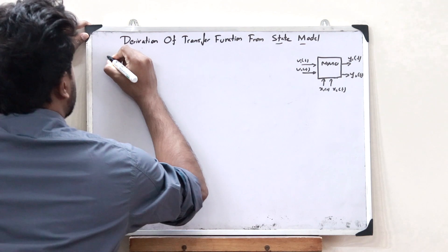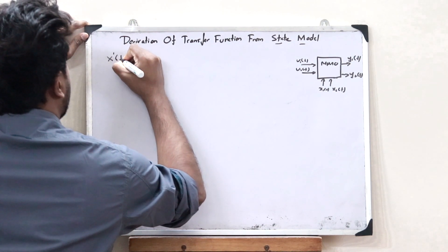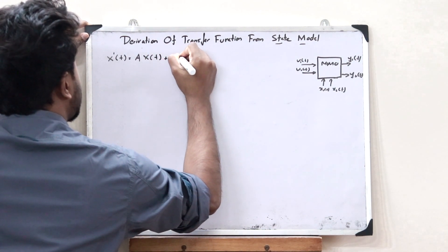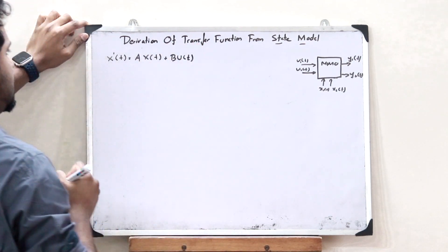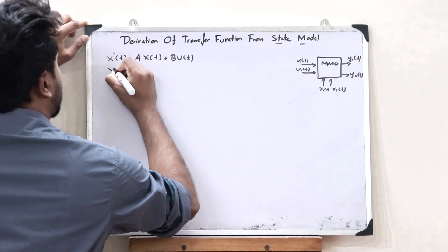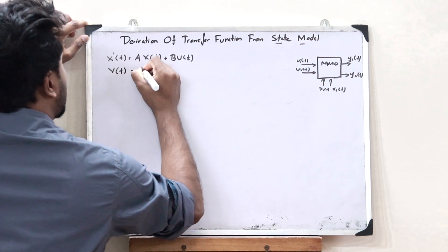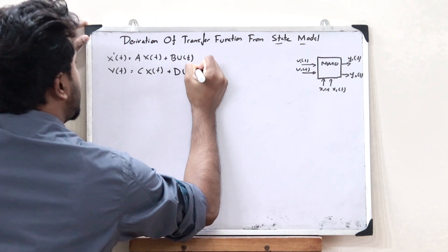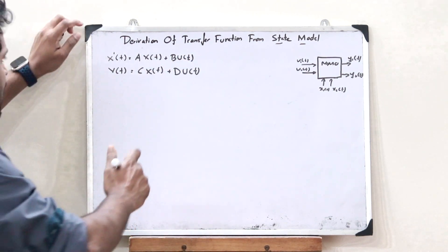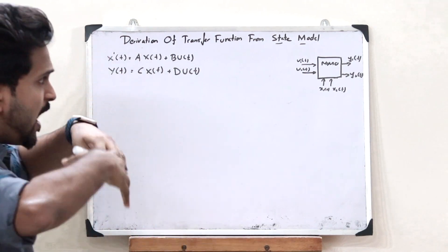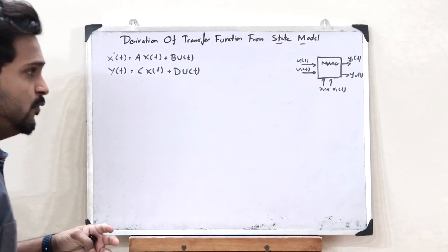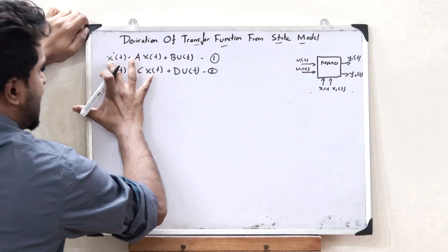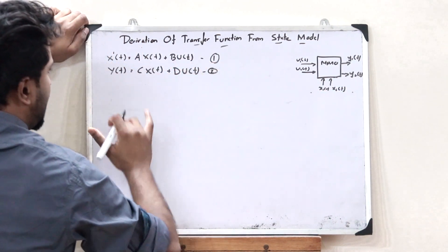The state equation is given as x-dot of t is equal to A into x of t plus B into u of t. And the output equation is given as y of t is equal to C into x of t plus D into u of t. Now the transfer function is nothing but the output transform divided by the input transform — that is, the output divided by the input.